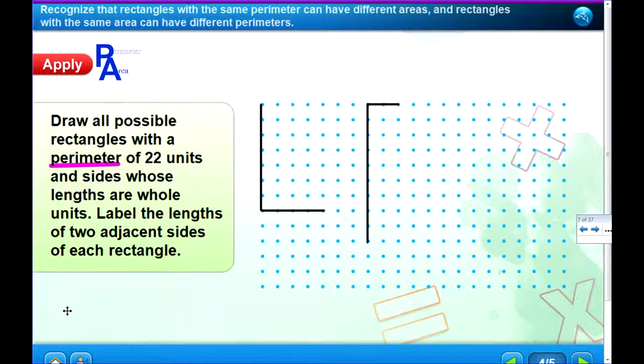Well, right here is our application, and this is similar to one of the problems on the homework assignment. It says to draw all possible rectangles with a perimeter of 22 units and sides whose lengths are whole units. So we can't do any halves, but we can label the lengths of two adjacent sides. If we want to do a perimeter of 22 units, we need to be able to count by 11 on each side. Remember, I did half. What's half of 22? 11. So I want to be able to count up to 11.